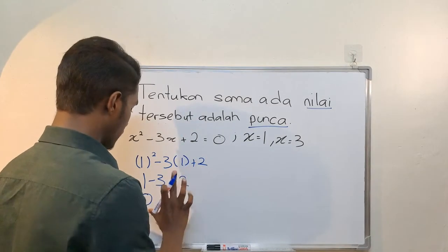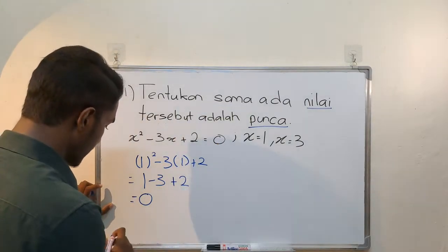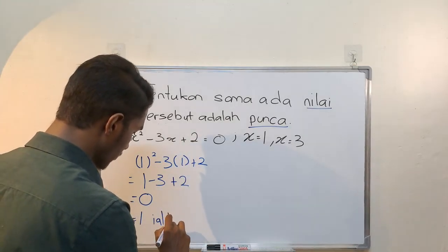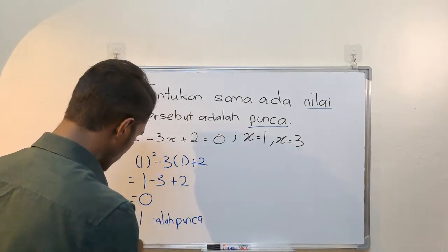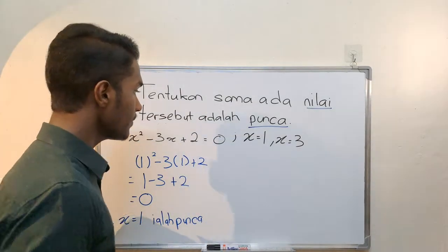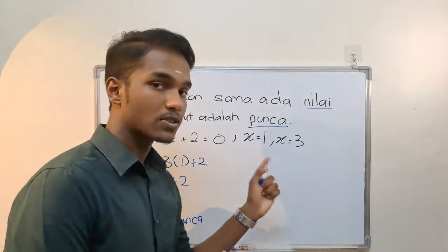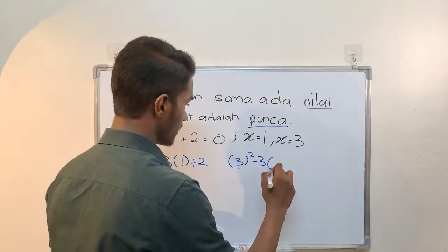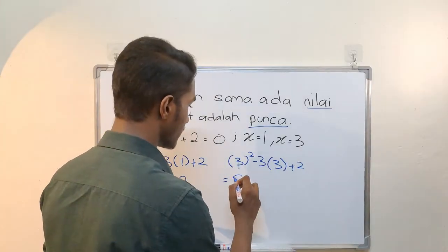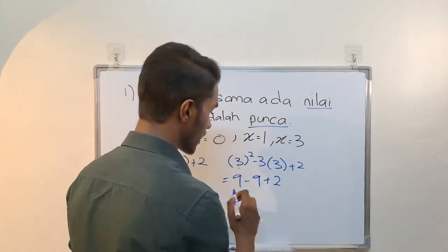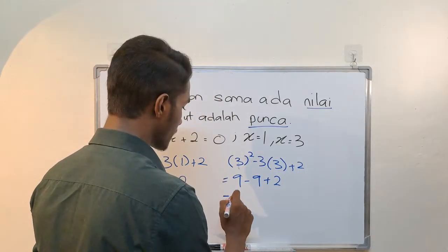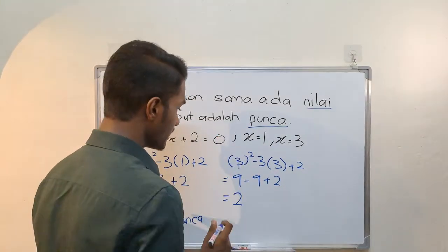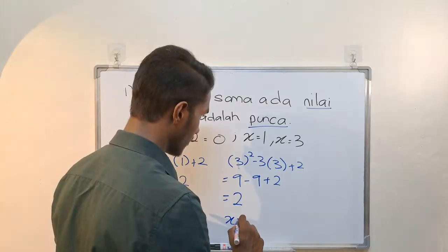Now this is 0, right? Now this is the same — 1 is equal to 1. So you have one answer. Now if x is equal to 3, try it. 3 squared is 9, 9 minus 9 is 0, plus 2 is 2. So the answer is 2. No, this is wrong.